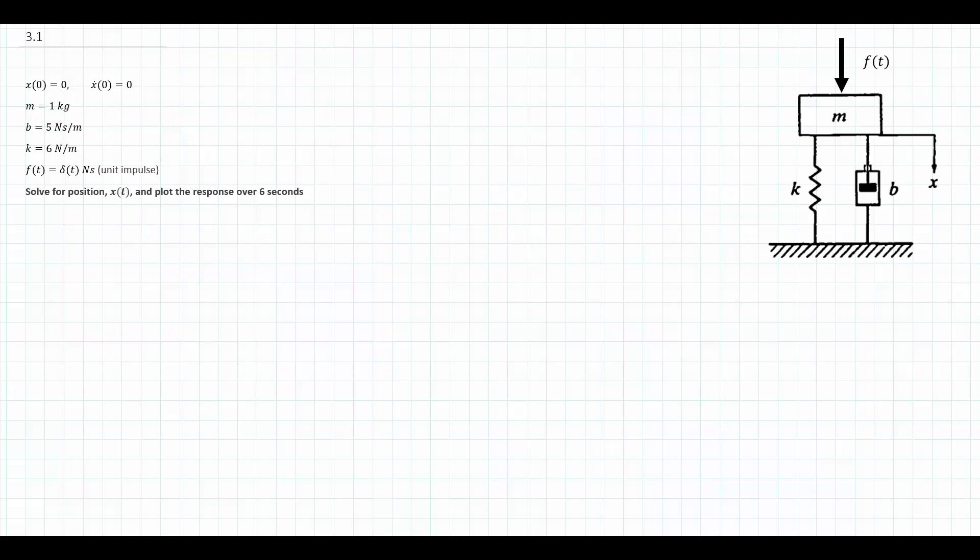In this case, we have this simple spring-mass-damper system. We have a mass connected to the spring and the damper in parallel, and we have a force being applied to it. We're told that the applied force is just going to be a unit impulse, and the system is going to start with a position of zero and a velocity of zero — zero initial conditions.